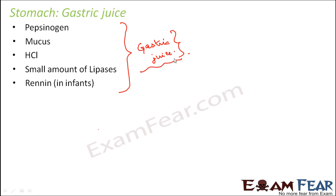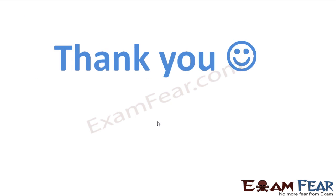Gastric juice is produced in the stomach by the gastric glands, which are located on the inner epithelial lining of the stomach. We will now see how this gastric juice — pepsinogen, mucus, HCl, and lipase — participates in the process of digestion, and look at the role of the stomach in digestion.